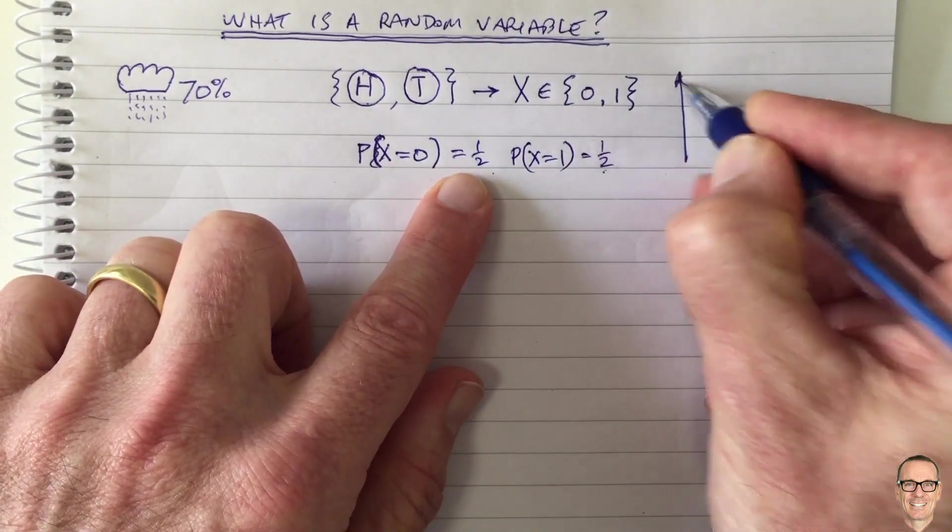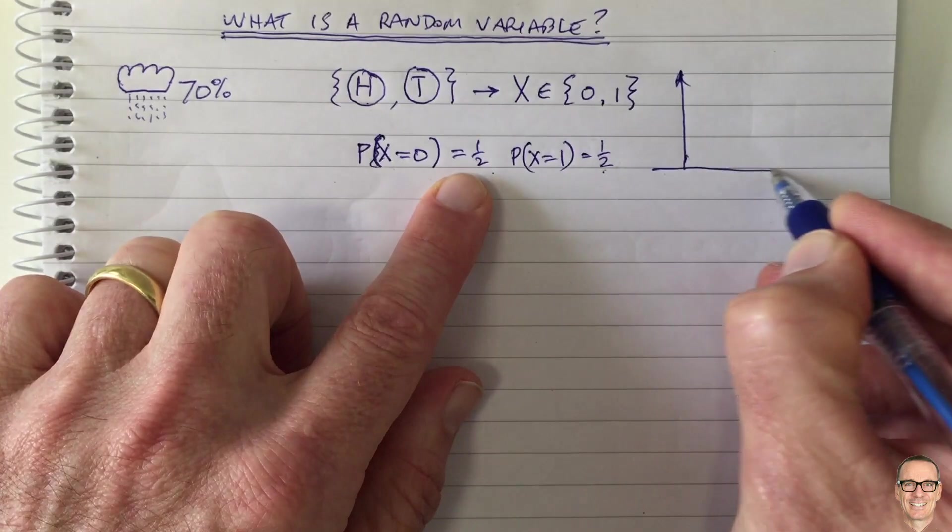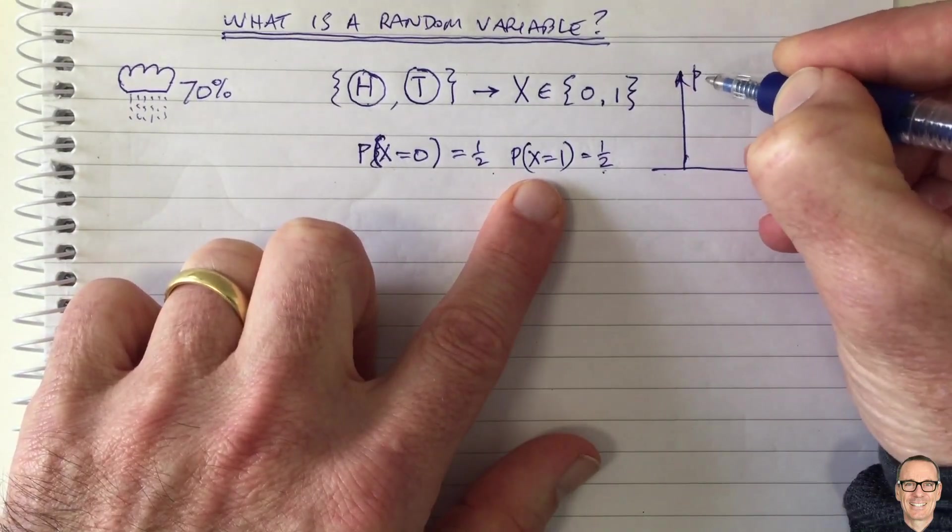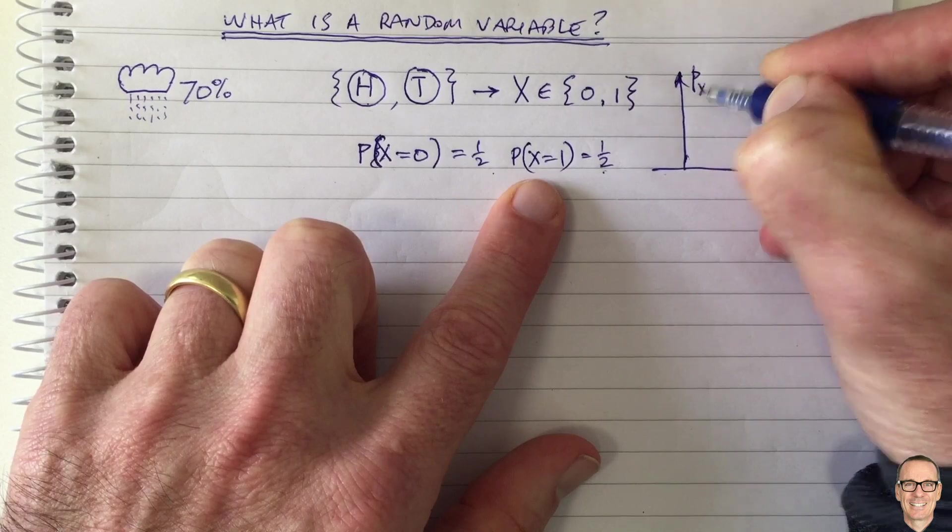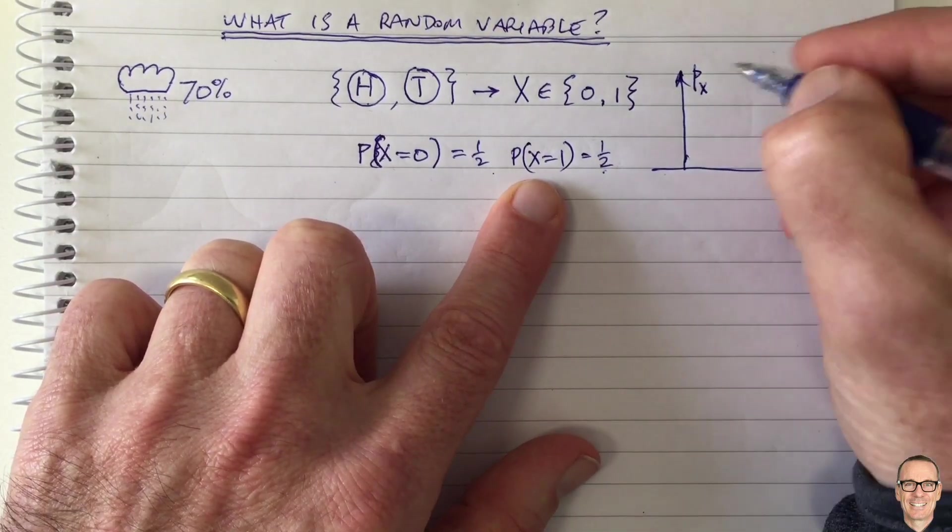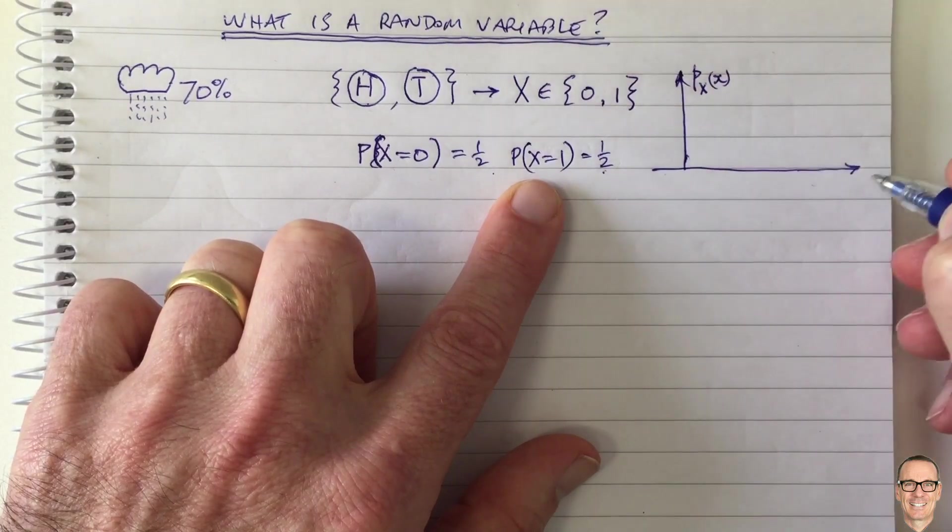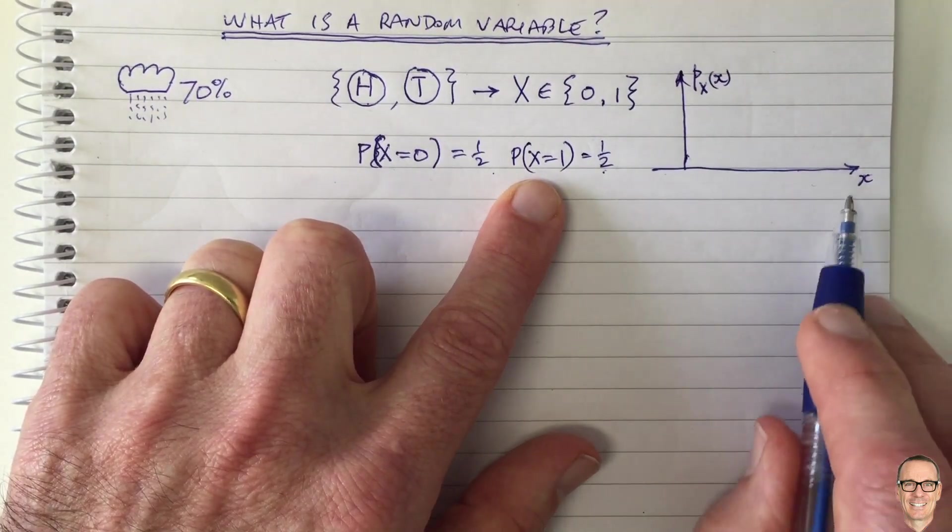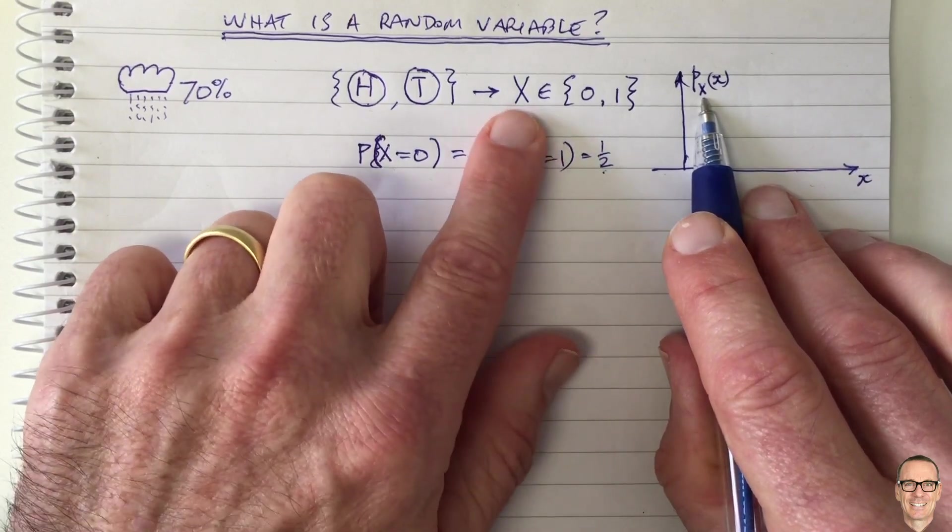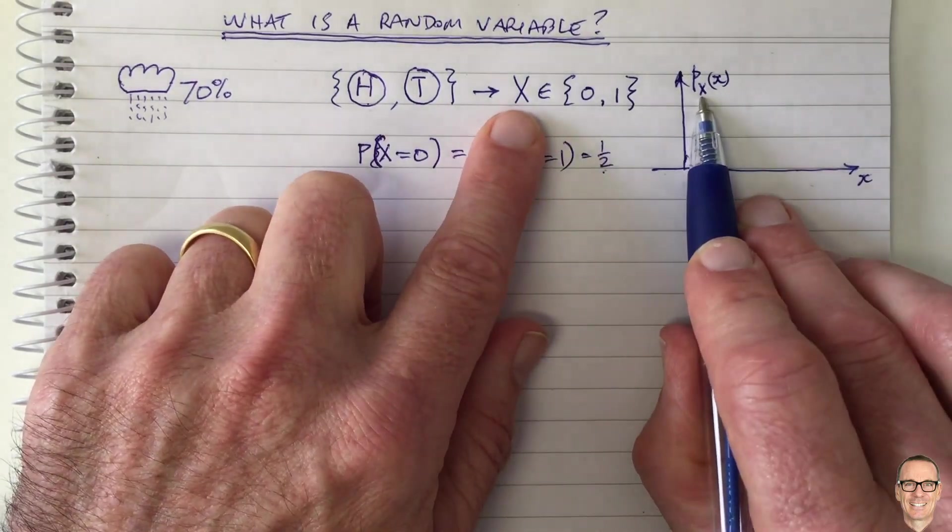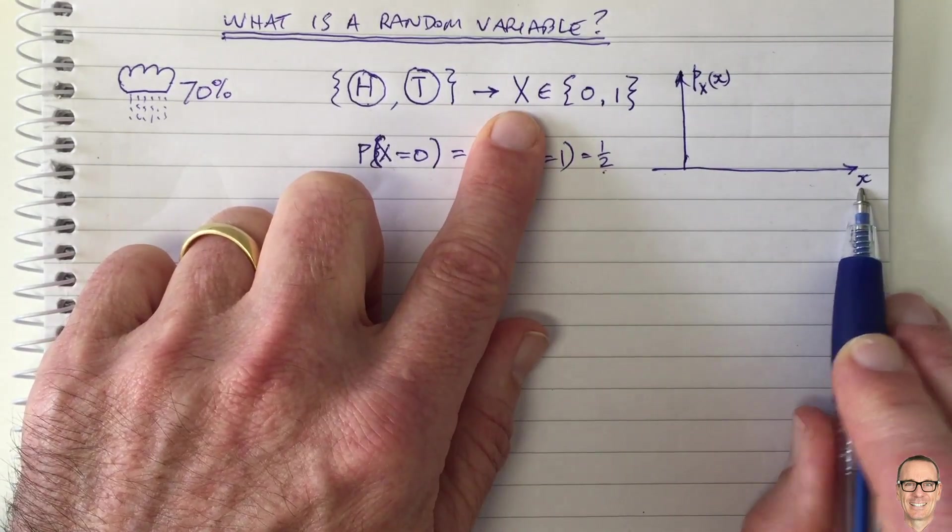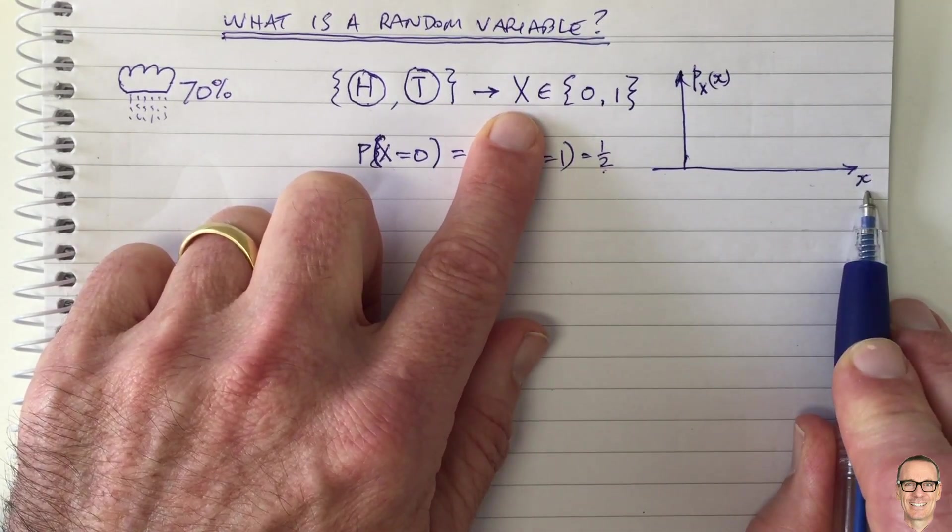In this case, let's draw out here, plot here what we call the probability density function. We use a little p for this, we give a subscript of the random variable. So this is a probability density function for the random variable X, and we plot it as a function of the values that it can take, and we use the lower case version of the random variable. So we traditionally use a capital letter for the random variable itself and a lower case variable for the values it can take.